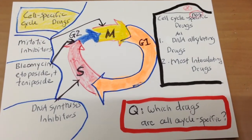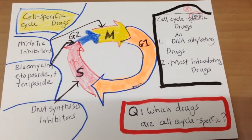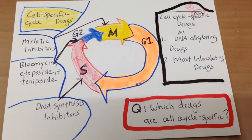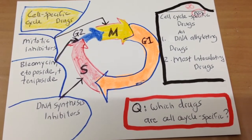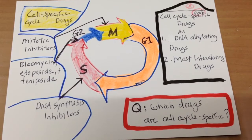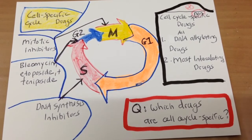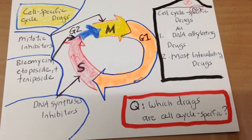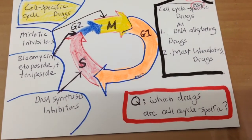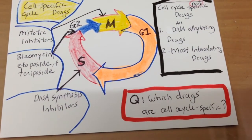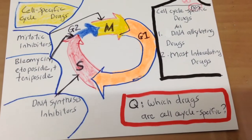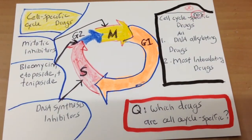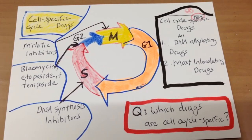The mitotic inhibitors work in the M phase. Then we have bleomycin, etoposide, and teniposide, which work in the G2 phase. Finally, the DNA synthesis inhibitors work in the S phase. Okay, let's try to remember these.